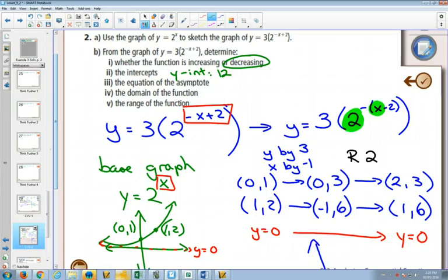The equation of the asymptote, we already know, did not change. It's at y equals 0. The domain is everything, and the range is bigger than or equal to 0. Oh, sorry. I did that twice, didn't I? You guys are good. Just bigger than 0.